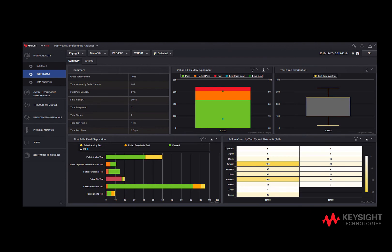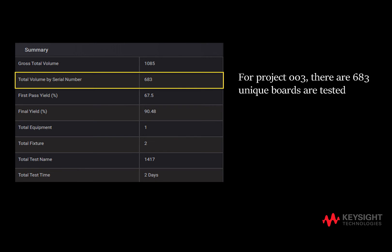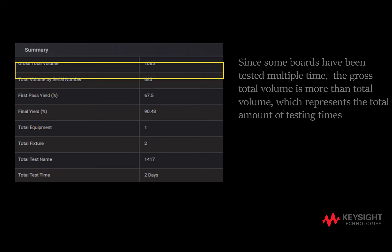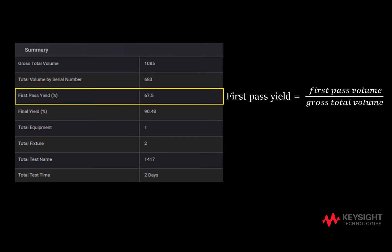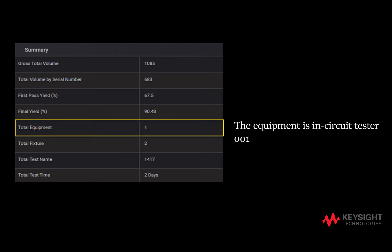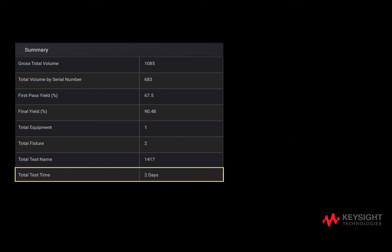The Summary Table shows several useful pieces of information. In this case, there are 683 unique boards tested in Project 003. Since some boards have been tested multiple times, the gross total volume is more than total volume, which represents the total amount of testing times. The first pass yield of 67.5% is derived by first pass volume over gross total volume. The final yield of 90.48% is derived by final pass volume over gross total volume. Project 003 uses in-circuit tester 001 for test equipment. There are two test fixtures: fixture 03 and fixture 08. All tests spent two days to finish.